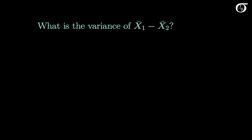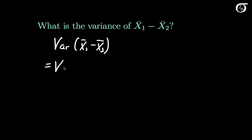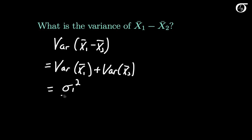What is the variance of the sampling distribution of the difference in sample means? If we want the variance of X1 bar minus X2 bar, we need to recall that if two random variables are independent, the variance of their difference is equal to the sum of their variances. So if we have independent samples, this is going to be equal to the variance of X1 bar plus the variance of X2 bar, which gives us sigma1 squared over N1 plus sigma2 squared over N2.